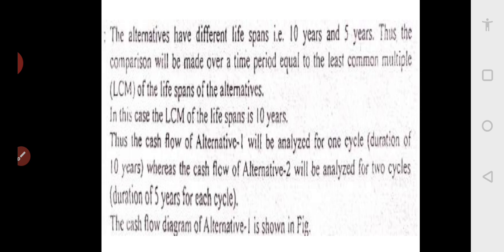The alternatives have different lifespans — 10 years and 5 years. Thus, the comparison has to be made over a time period equal to the least common multiple (LCM) of the lifespans. The LCM of 5 and 10 is 10 years. The cash flows of alternative 1 will be analyzed for only one cycle of 10 years, whereas the cash flows of alternative 2 will be analyzed for two cycles of 5 years each. After the first 5 years, we sell the first machine for scrap, then buy the same type of machine at the same cost and run it for another 5 years.